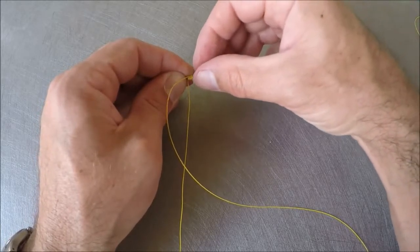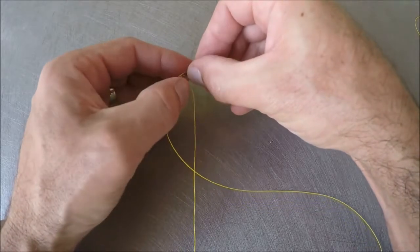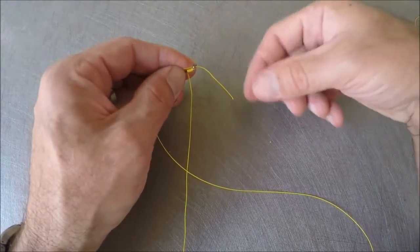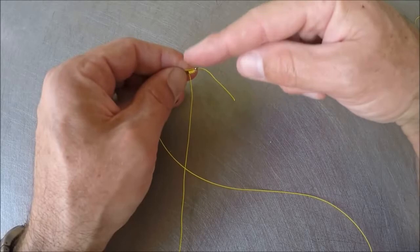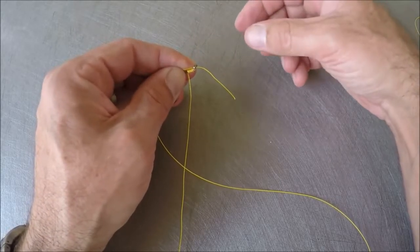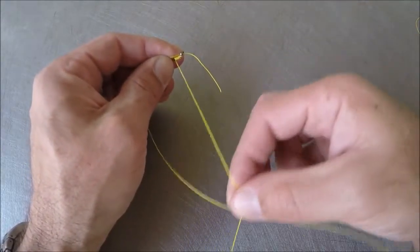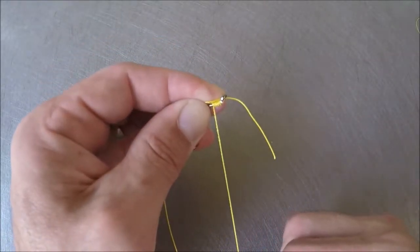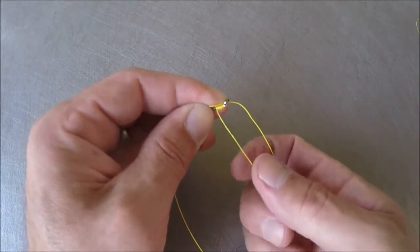Now I'm gonna hold everything together and pinch it all down. I've got it between my thumb and my index finger, everything's pinched down. So this is the line that I was wrapping with, you can see right there it's coming off the wraps.